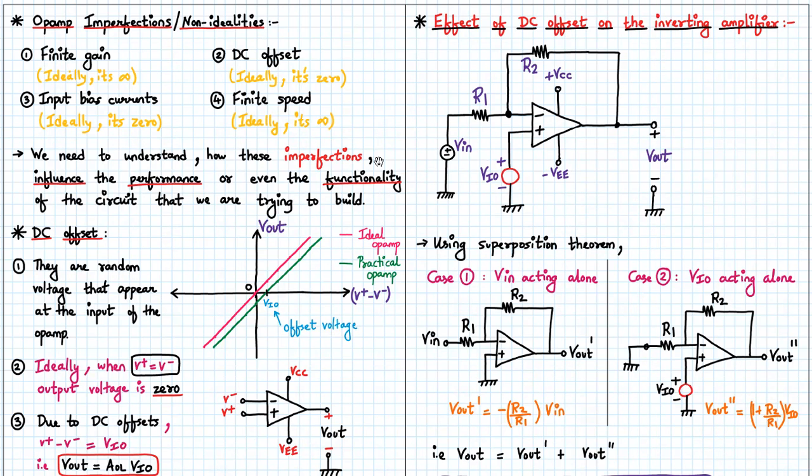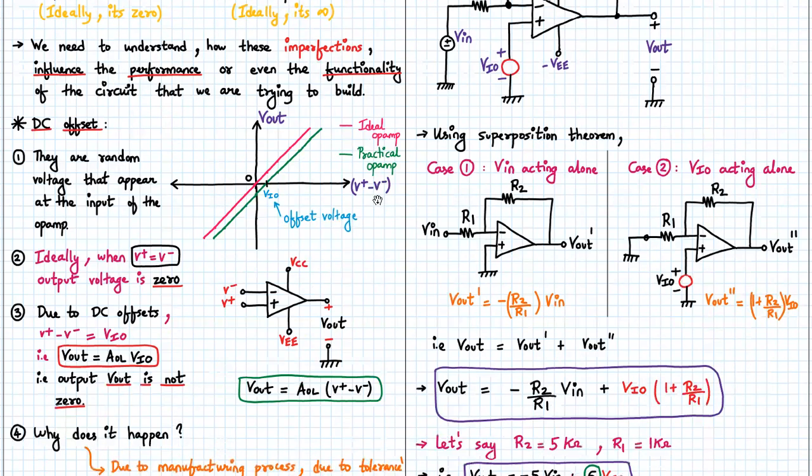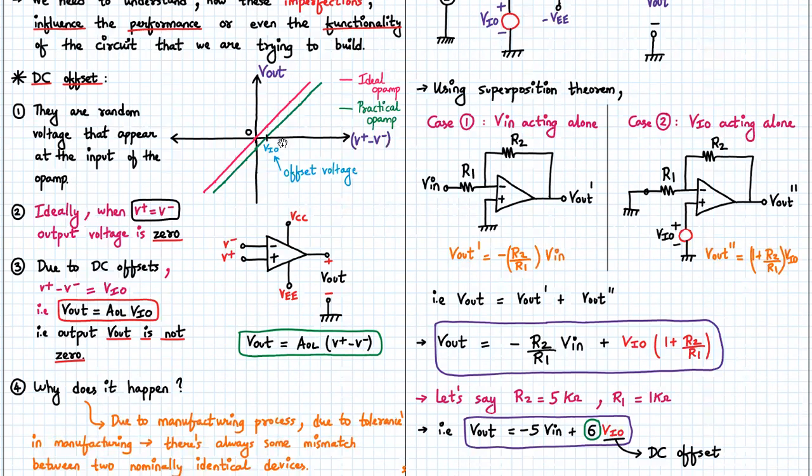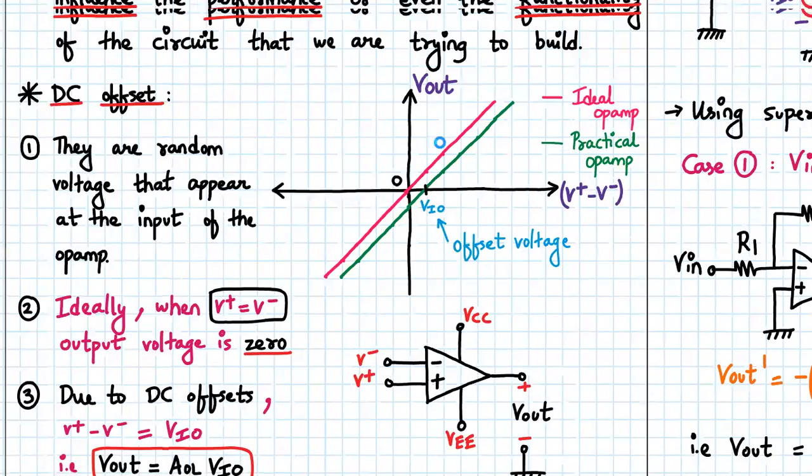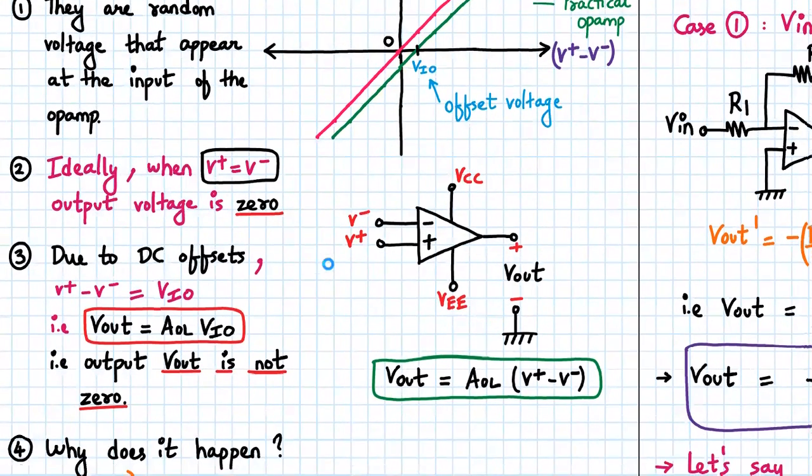So let us begin with our first op-amp imperfection, that is DC offset. What is DC offset? Let me clarify a bit more.